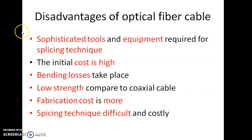There are also disadvantages. Sophisticated tools and equipment are required for the splicing technique. For example, suppose the distance is 500 km and the available optical fiber length is 100 km — then you need five fibers, and at the ends of each fiber you need a splicing technique or coupling to join the optical fibers. The initial installation cost is very high.